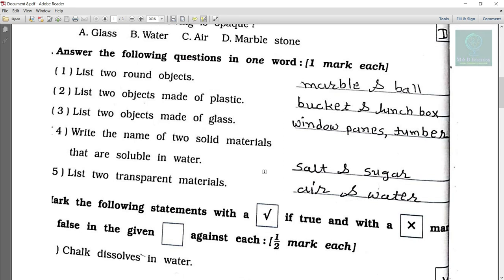List two objects made of glass. So window pans and tumbler. Write the name of two solid materials that are soluble in water. So salt and sugar. List two transparent materials. So air and water.